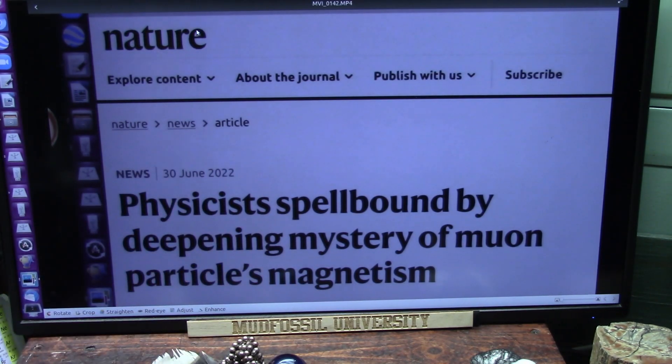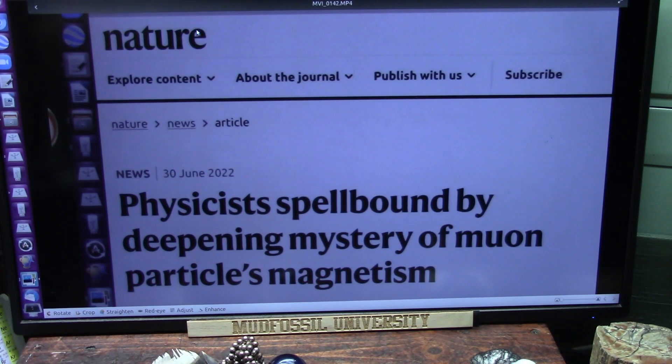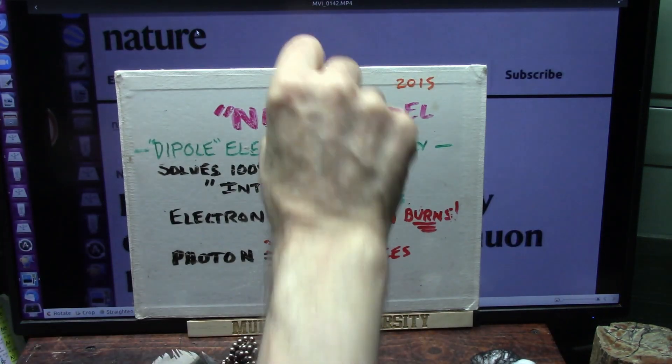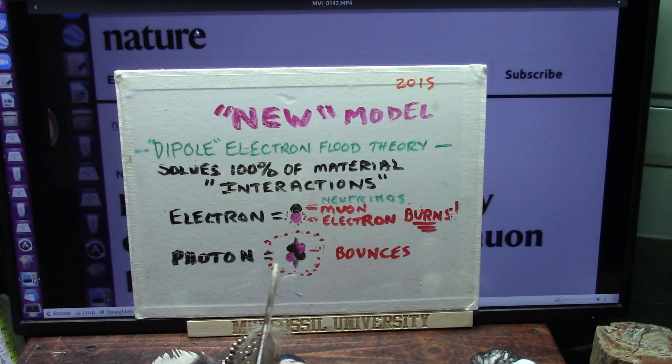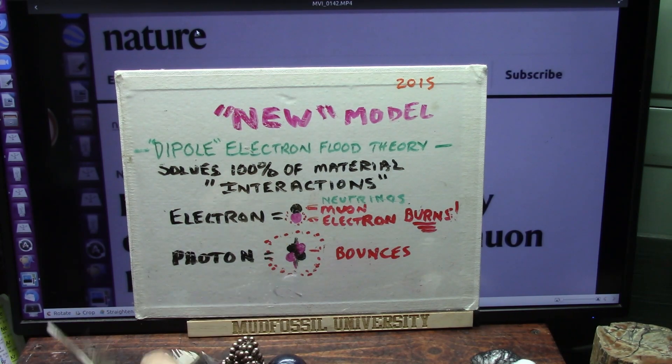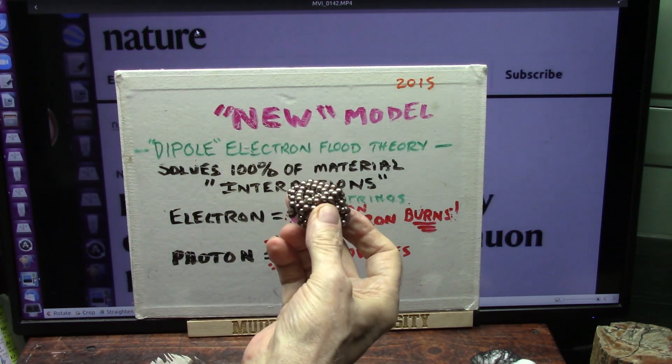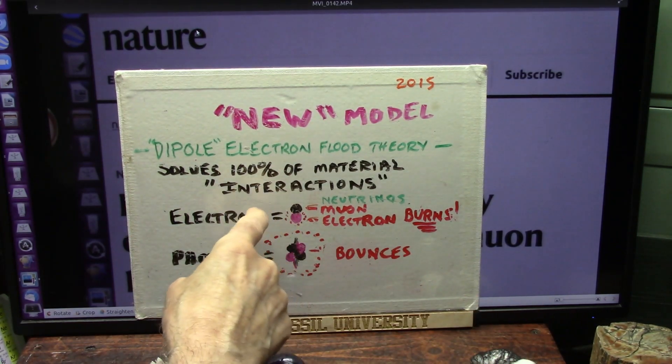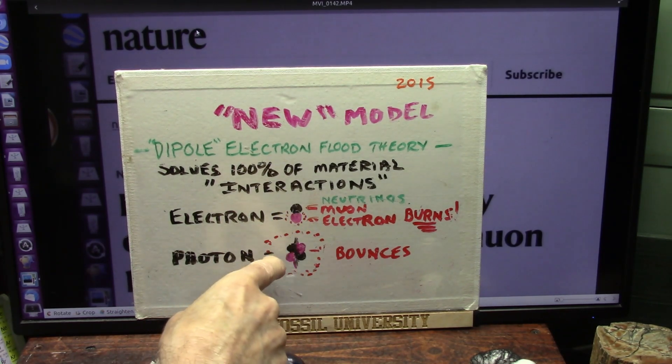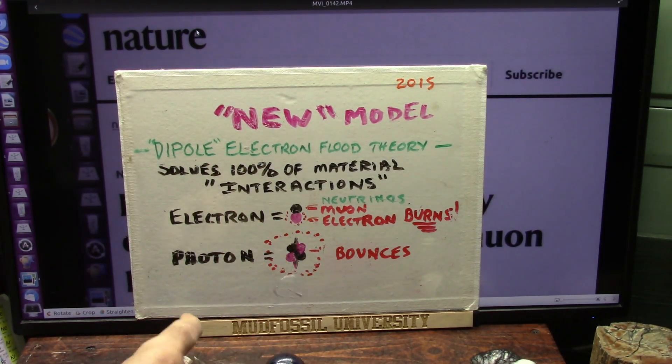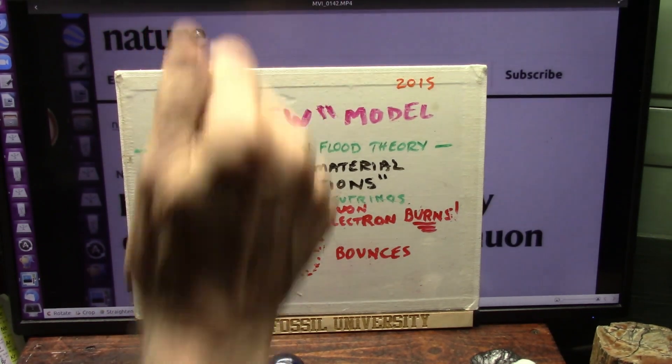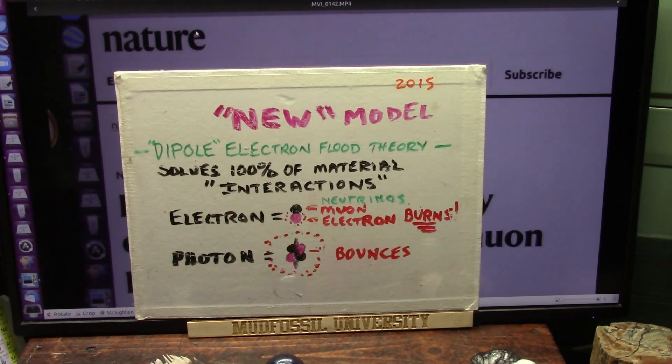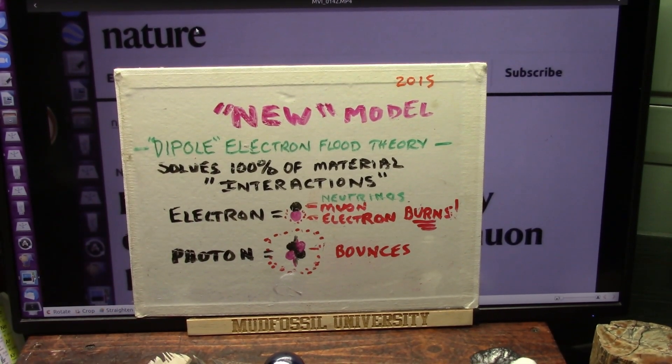And now they realize it, but they're still trying to stick to the standard model. It doesn't work. The only thing that does work is this one right here, which is the new model. It's simple. It covers everything, and the only two particles that exist are these, and protons are made of those. An electron is nothing more than a dark part and a burning part. They're called neutrinos. When you put two of those together, you make a photon. I've shown it thousands of times. It's time to start working on this.